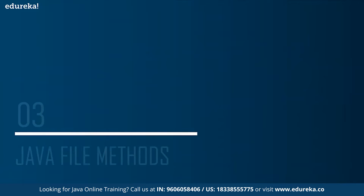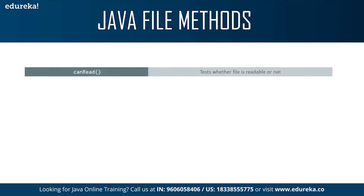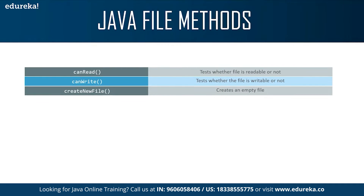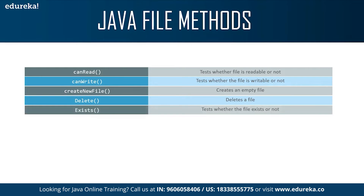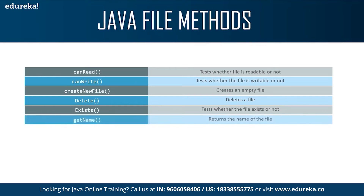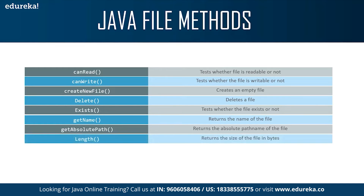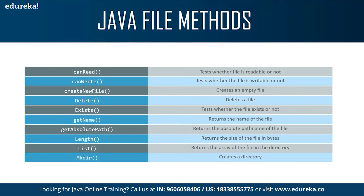Now let's have a look at the various file methods that are useful to perform Java file operations. First, canRead — this method is used to test whether the file is readable or not. Next, canWrite — this tests whether the file is writable or not. createNewFile creates an empty file. delete is used to delete the file. exists tests whether the file exists or not. getName returns the name of the file. getAbsolutePath returns the absolute path name of the file. length returns the size of the file in bytes. list returns an array of files in the directory, and mkdir is used to create a directory.